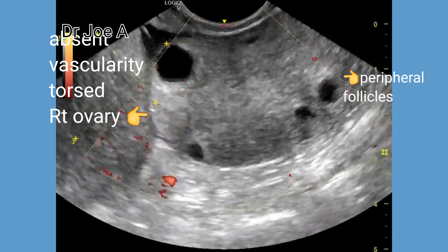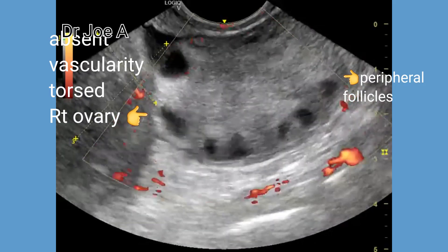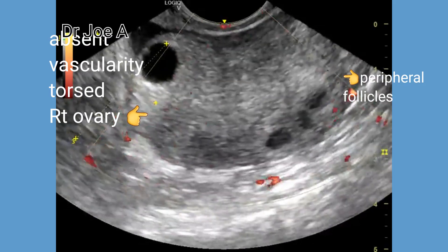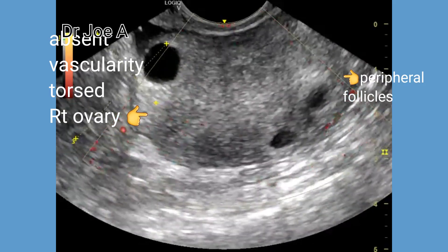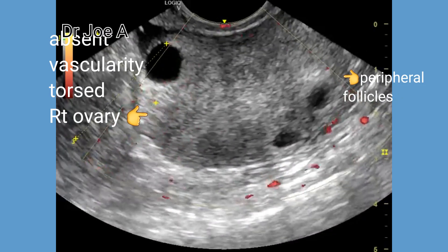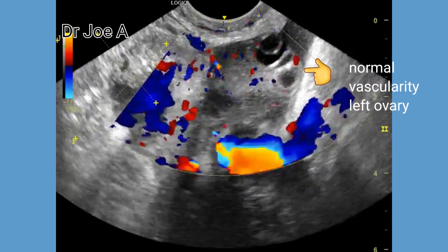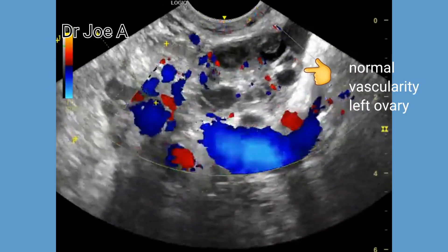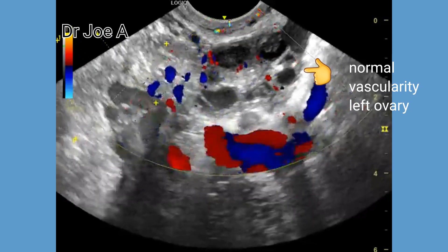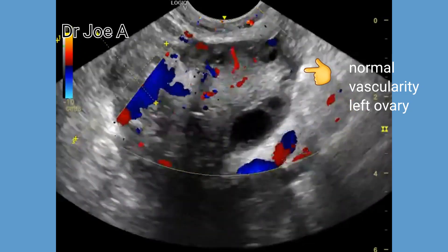In addition, we tried to look for the twisted pedicle sign. However, we could not identify the pedicle in this patient. The left ovary shows normal vascularity in contrast.